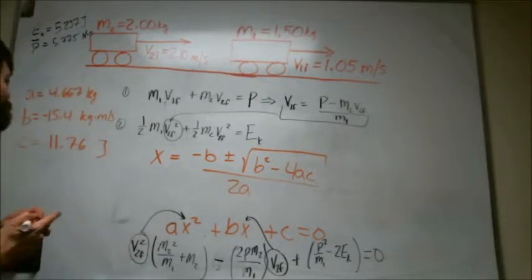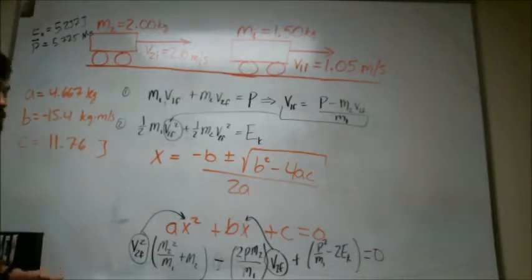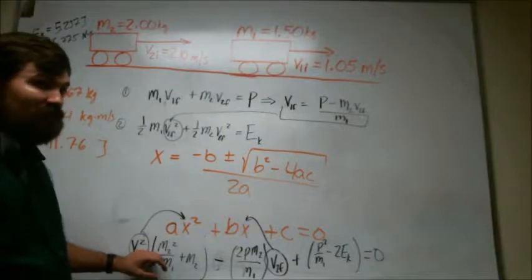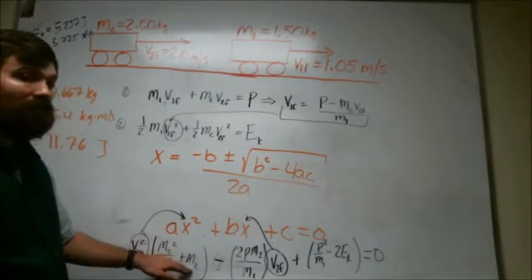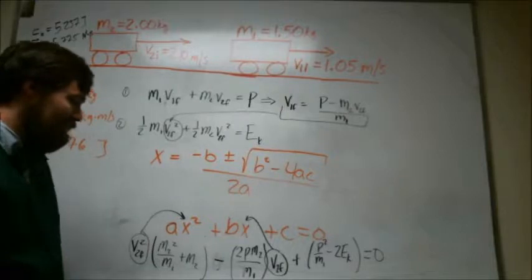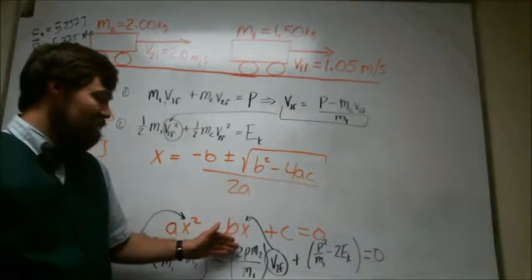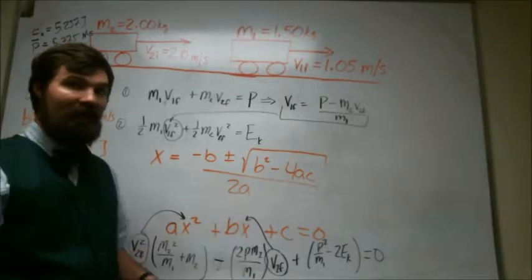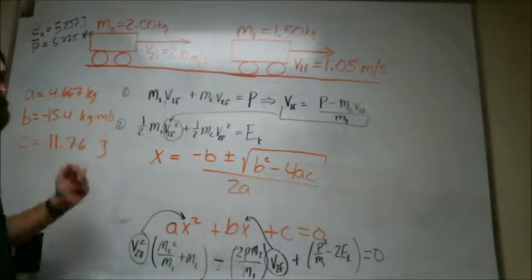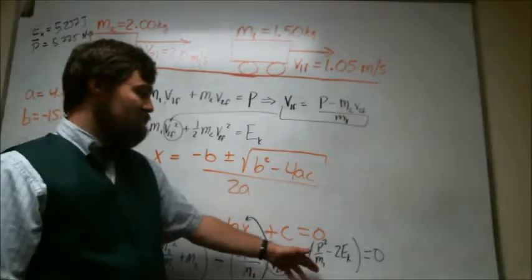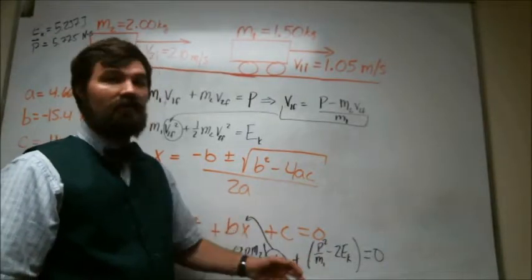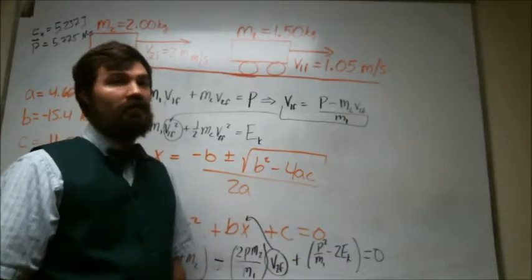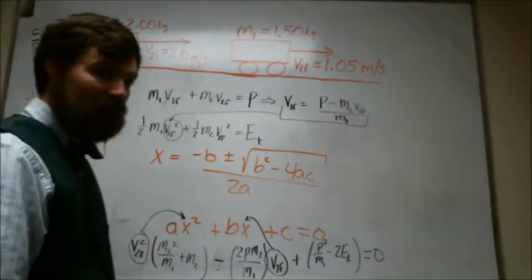And these are in fact the units that you end up with for each of these. a has mass squared over mass, which is going to give you mass, that's kilograms, plus mass, that's kilograms. b is 2 times momentum times mass divided by mass, so you should end up with units of momentum, so that's good. c is momentum squared over mass, which is units of energy, minus 2 times energy, so that should be units of energy, joules, so that's good.